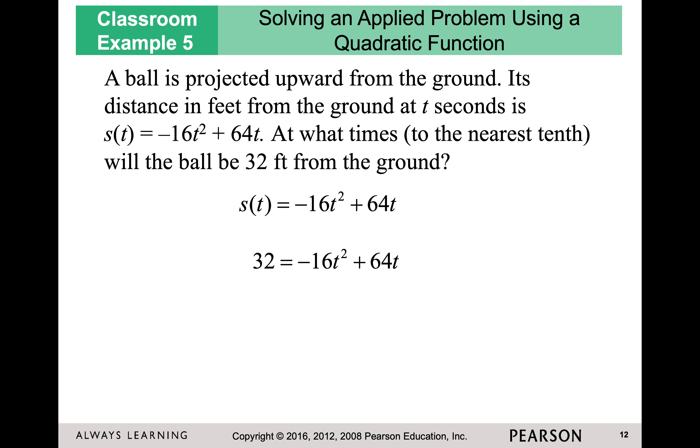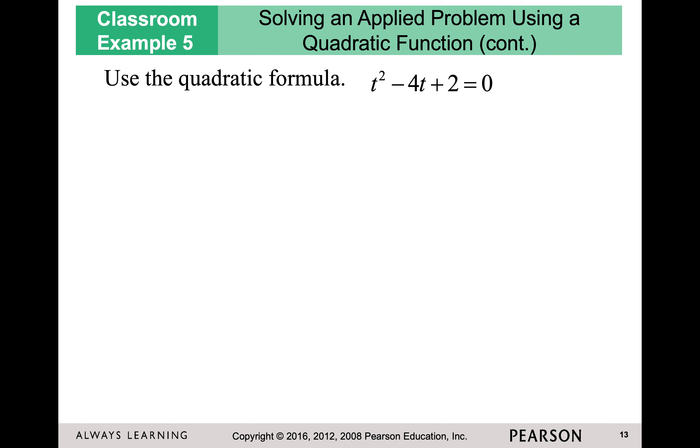If I want to know when it is 32 feet from the ground, I'm going to make it equal 32, and I'm going to solve for t. It's a quadratic. Got to get it in standard form. Once it's in standard form, it is your option to how you want to solve. I would divide everybody by 16. That's just my process. Then from there, this does not factor. So we're going to have to use the quadratic formula, and we're going to get 4 plus or minus the square root of 8 over 2.